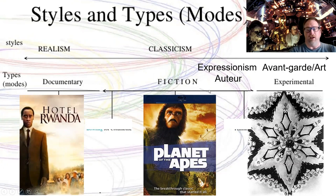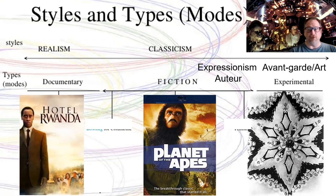Auteur means author. That's where you have a director whose films you very much know when you're looking at. For example, if you watch a Tim Burton film, you know you're looking at an expressionist type filmmaker. You see a Quentin Tarantino film, you absolutely know the different features you're going to see, particularly for those of you who are fans. They almost always are just a little bit right of classicism.